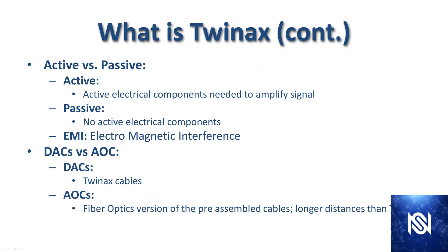Active versus passive: active means there are electrical components needed to amplify the signal, and this goes for TwinX cables that are longer than five meters. They have to have electrical components within the cable to amplify the signal to deliver that same bandwidth and speed over the entire course of the cable. With passive there are no electrical components doing that, and passive is generally for cables that are five meters and less.